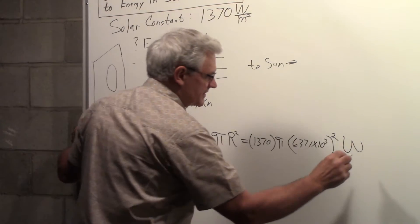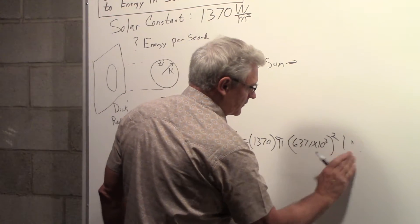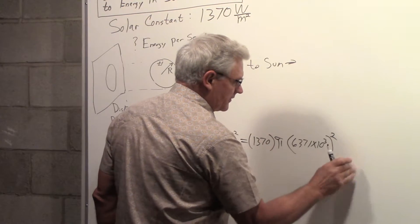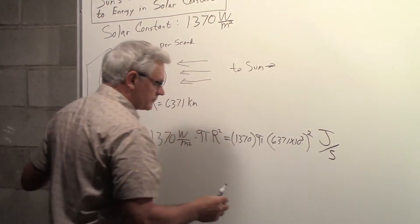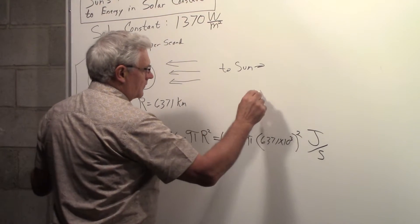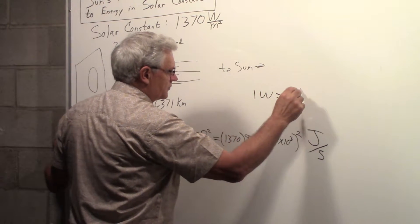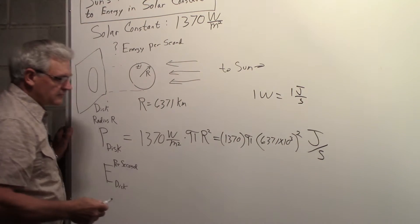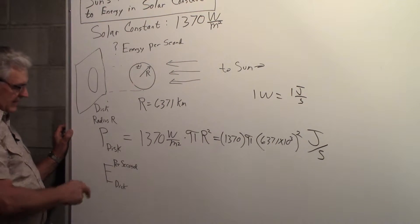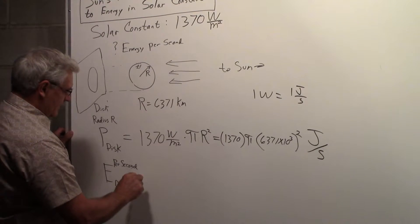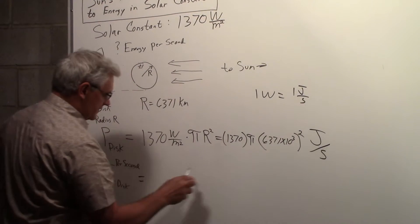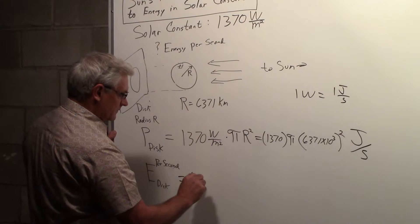Now watts is joules per second. So we could put in here joules per second. One watt is equal to one joule per second. So now what we could say is the energy per second that's falling on that disk is going to be this number in joules.